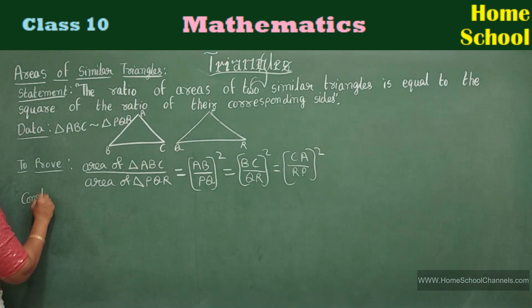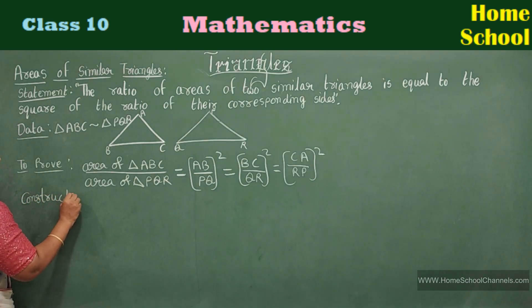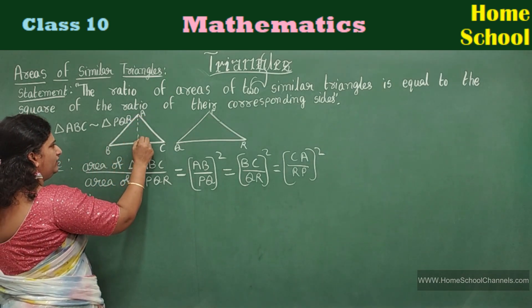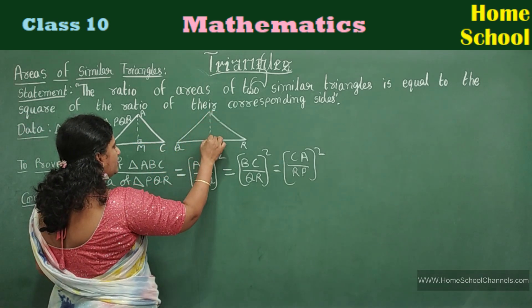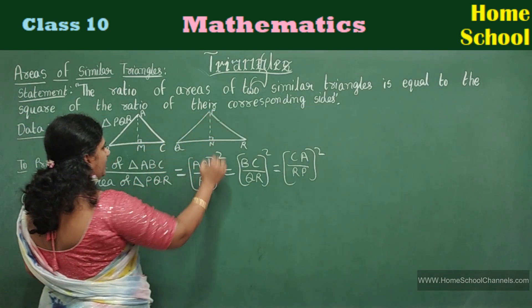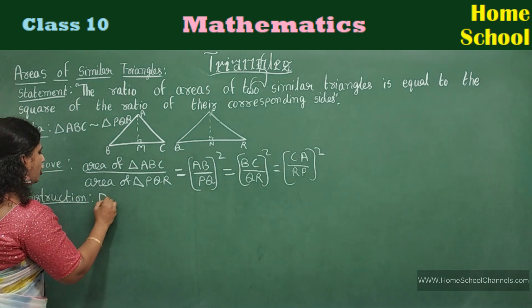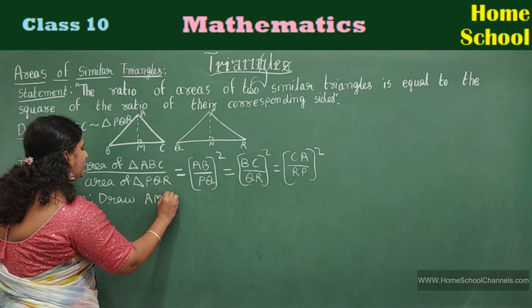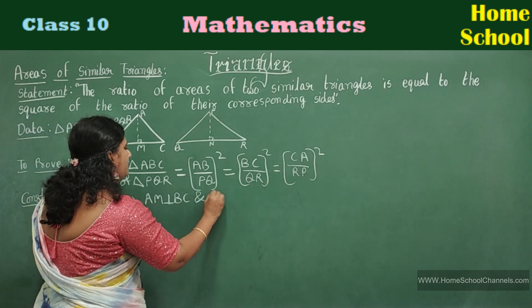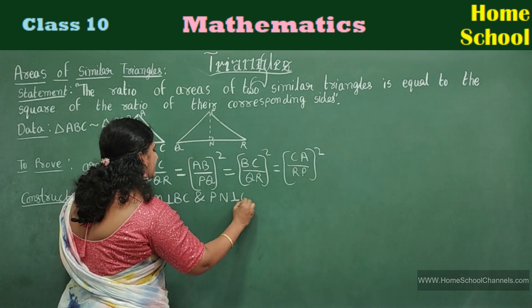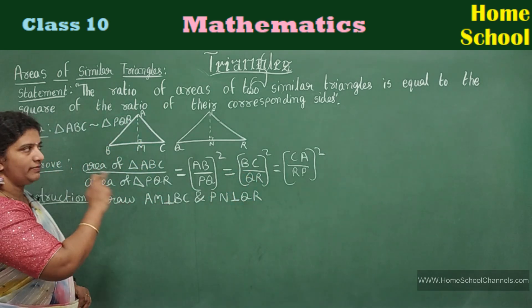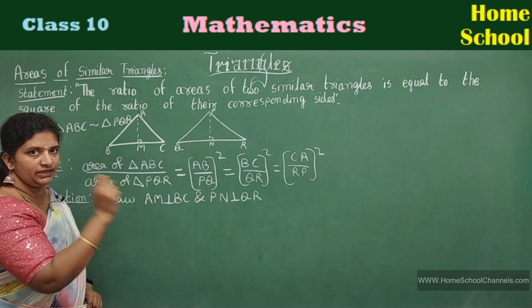Construction: Do we need any construction? Yes. Draw AM perpendicular to BC, and from the other triangle, draw PN perpendicular to QR.